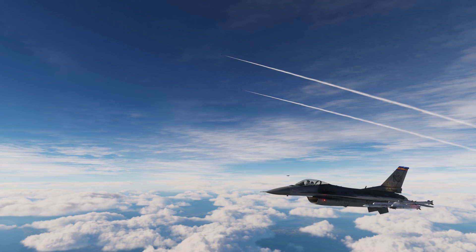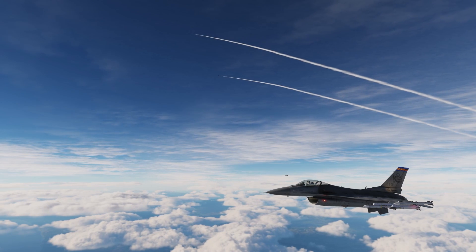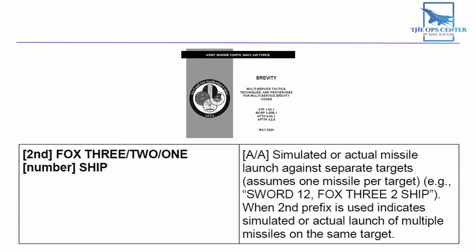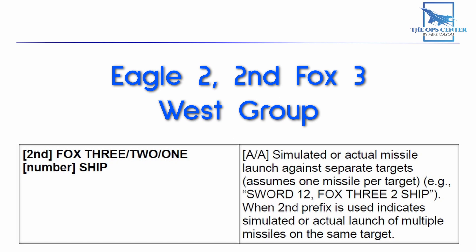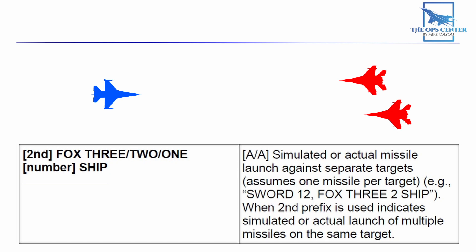There's also a version of the Fox code for multiple missile launches. When you use the 'second' prefix, it means an additional launch against the same target: 'Eagle 2, 2nd Fox 3, West Group.' This is what would follow if an initial weapon missed, or if the pilot wanted to increase the probability of a kill with an additional shot. The other way to indicate additional launches is with a suffix — so if Sword 1-2 was targeting a pair of hostile aircraft, the call would go: 'Sword 1-2, Fox 3, 2-ship.' This assumes one missile per target and keeps the pilot from making repeated Fox calls.